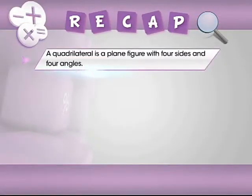With that extra bit of information, I'm sure you would like a recap. Here we go. In this module you have learned that a quadrilateral is a plane figure with four sides and four angles.